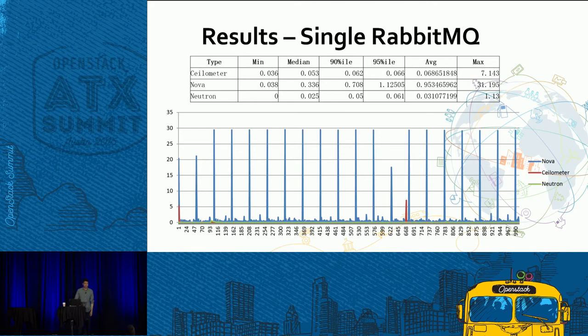In these graphs the Y-axis is the time between sending the message and receiving it, and the X-axis is the message ID representing each individual message.